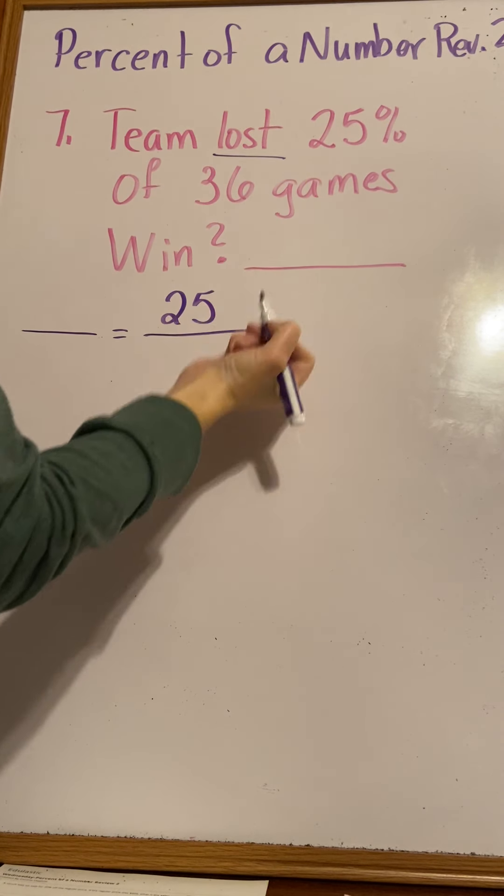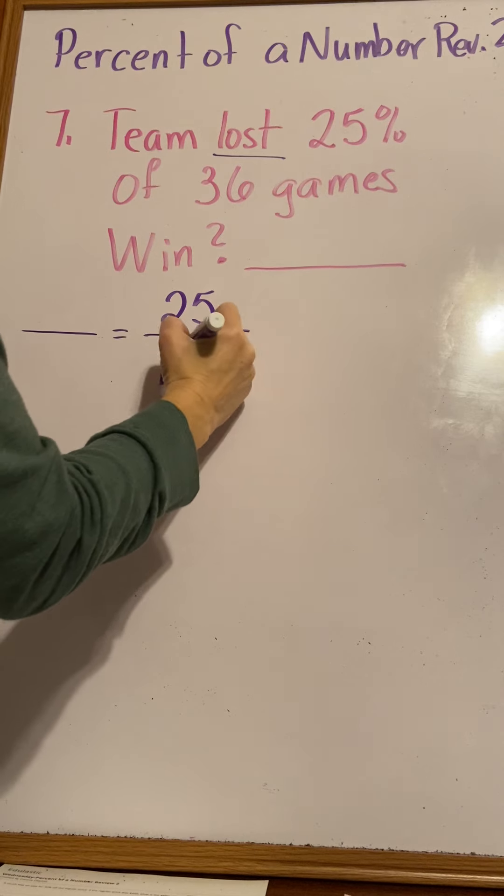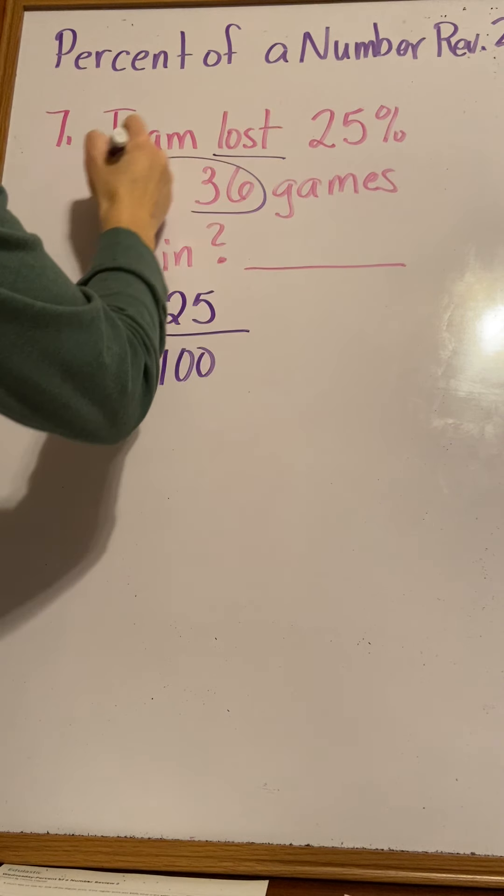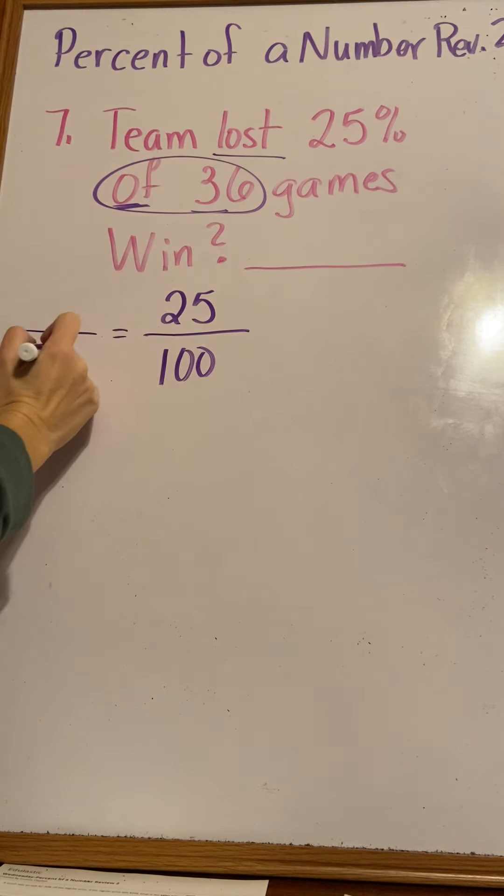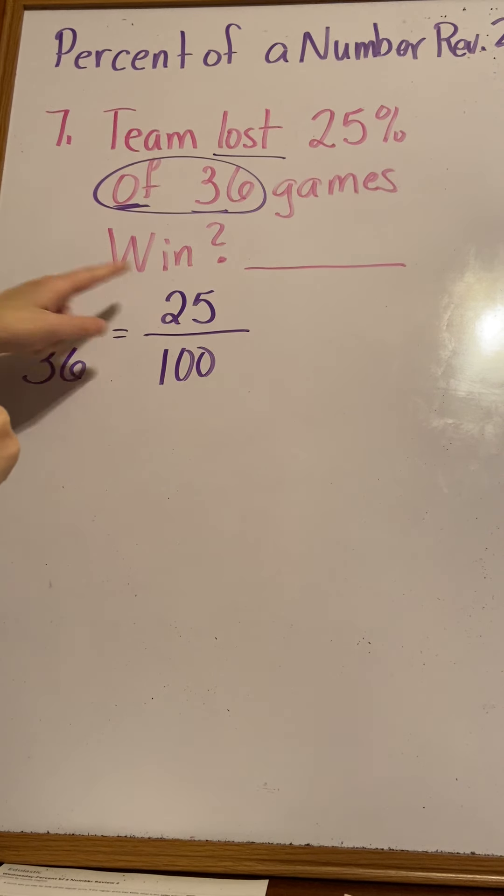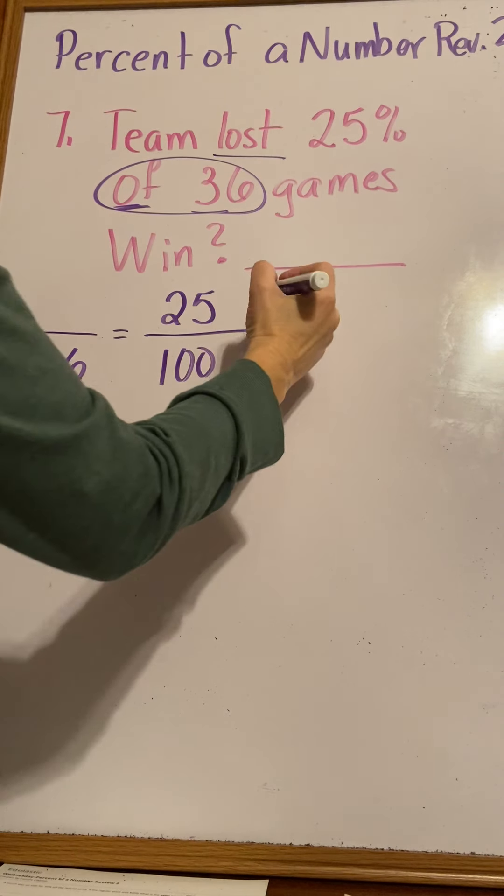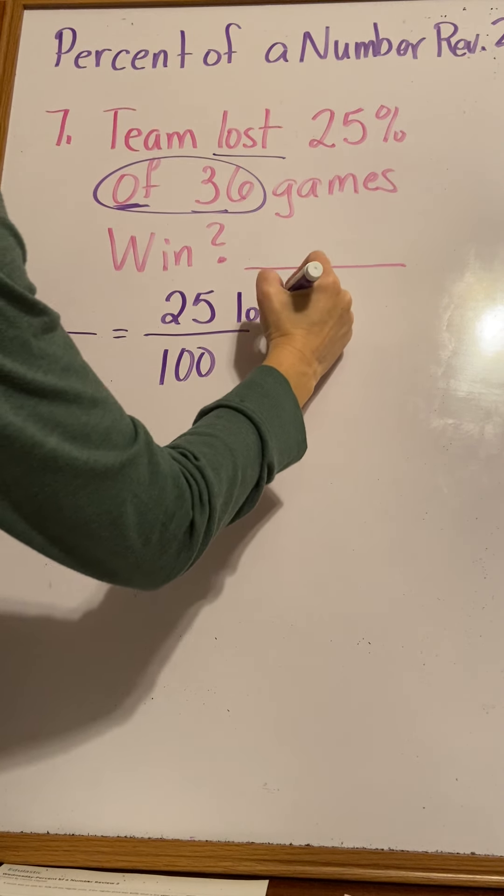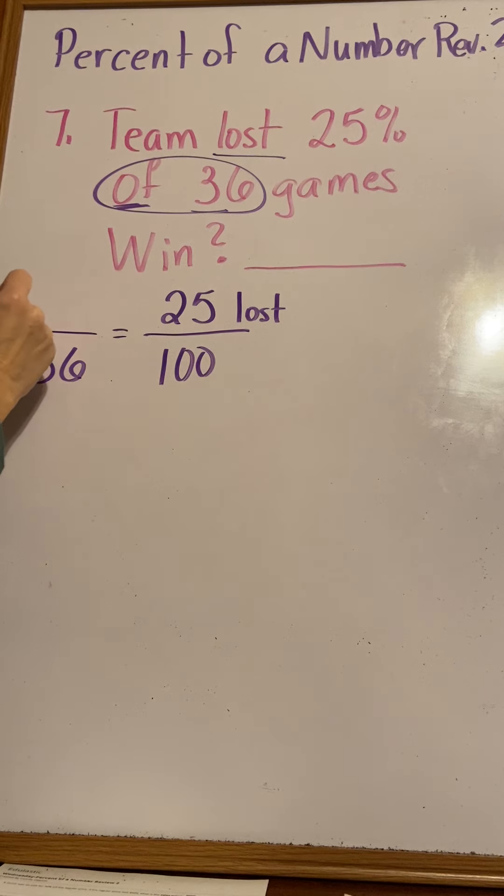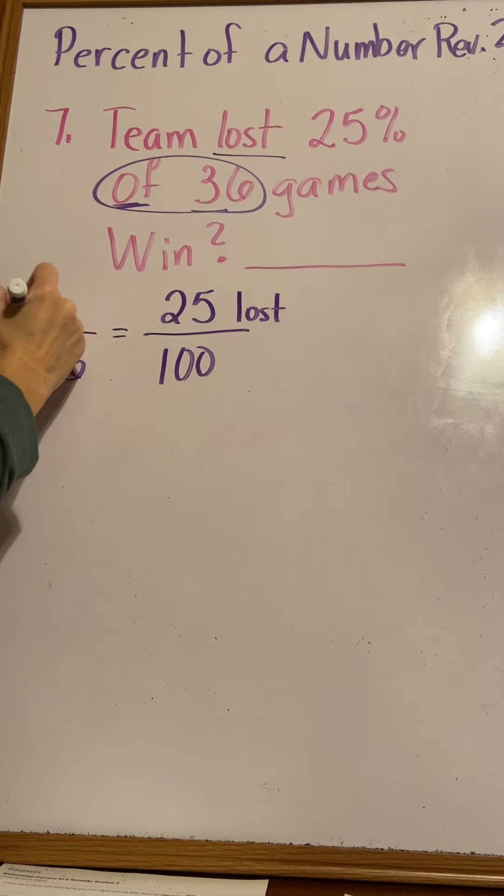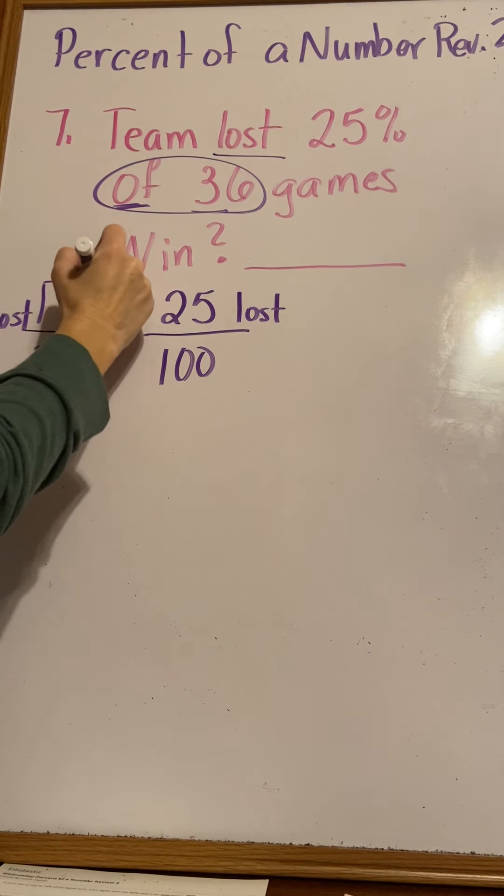You can say 25% out of 100 of 36 games. See that word 'of' right there? Of represents our whole group. So 25% of our 36 games. These are the games that they lost. When we find the answer over here, this is going to be the number of games that they lost.